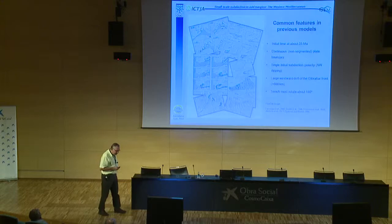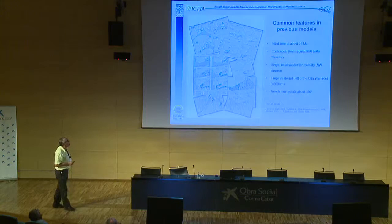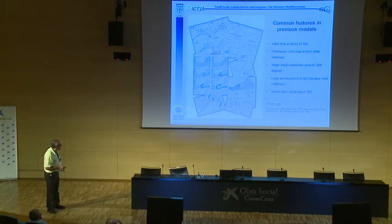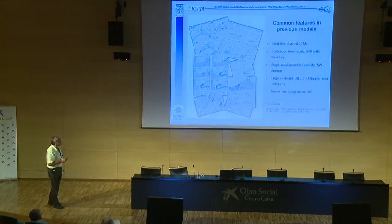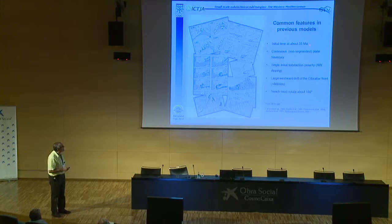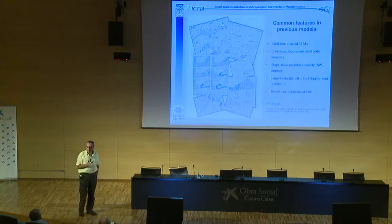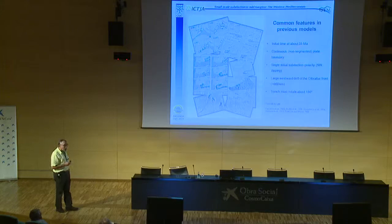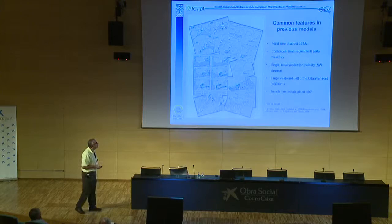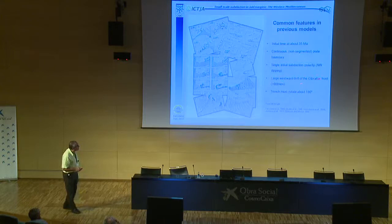Many models have been proposed to explain this region's evolution, mainly by Faccenna, Platt, Rosenbaum, Andrés, Spakman et al. They share common features: initial evolution starting at 30–35 million years ago, a continuous non-segmented plate boundary, subduction polarity directed to the northwest, a large westward drift of the Gibraltar front exceeding 600 kilometers, and a trench rotation of more than 180 degrees — necessary because subduction must flip from dipping northwest to dipping southeast.